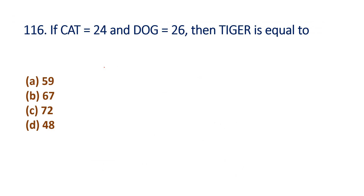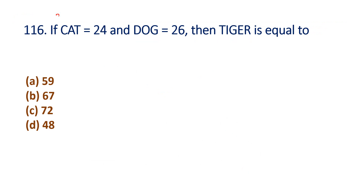Question 116: Cat is coded 24, Dog is coded 26. Tiger — choose the answer. C=3, A=1, T=20, total is 24. Codes are based on alphabetical position. Dog: D=4, O=15, G=7, total is 26.